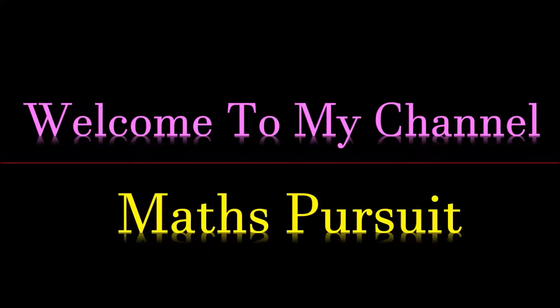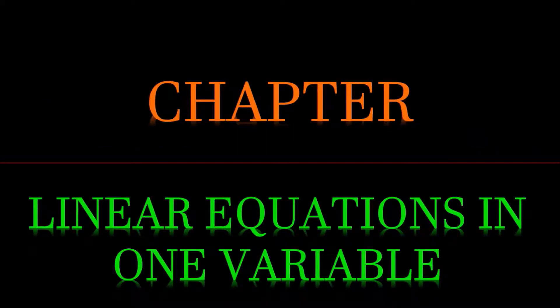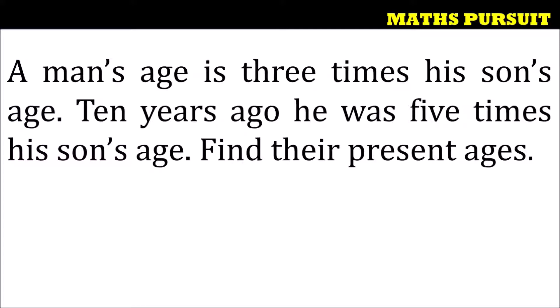Welcome to my channel Maths Pursuit. Today we will look into questions from the chapter called Linear Equations in One Variable. The given question is: a man's age is three times his son's age. Ten years ago he was five times his son's age. Find their present ages. Let us see how we can solve these types of questions.